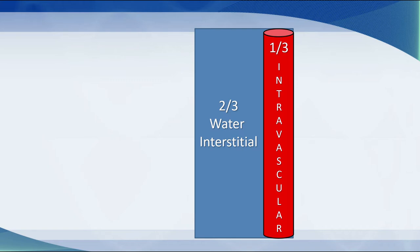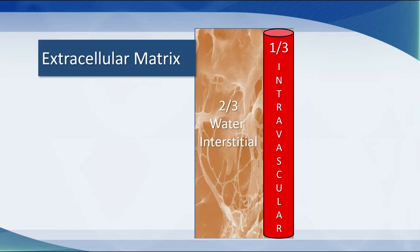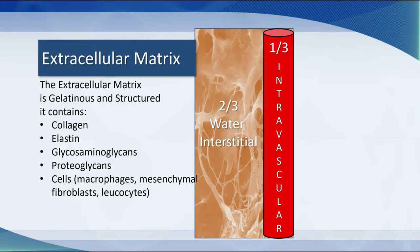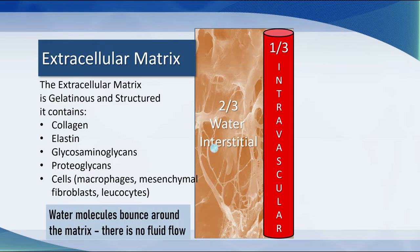Outside the intravascular space, we have the interstitial space, and that space is made up of an extracellular matrix. It's gelatinous, it's structured, and it contains collagen, elastin, glycosaminoglycans, proteoglycans, and a whole bunch of different cells such as macrophages, fibroblasts, and leukocytes. Now, there are water molecules in there, but they bounce around the matrix. There is no fluid flow — just little droplets that pop around.